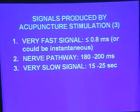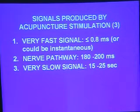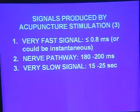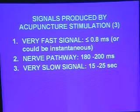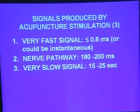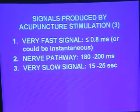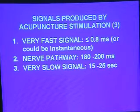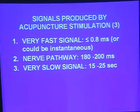We've delineated three different pathways by which the signals of stimulation actually get to the brain. There's this very, very fast signal — it could be instantaneous. There is activity seen in the visual cortex about 180 to 200 milliseconds later, which is clearly along a nerve pathway. And then there's this very slow signal that moves along the meridians, taking many seconds to reach the brain center.